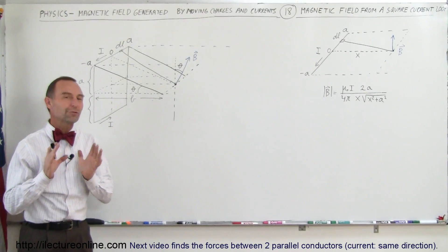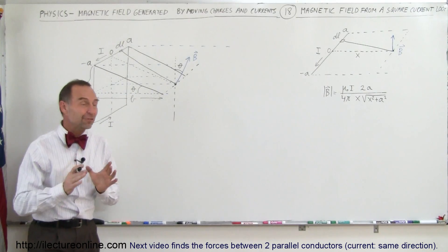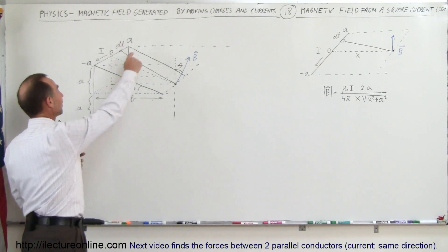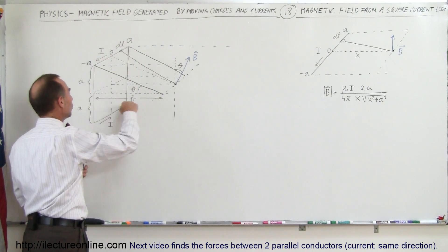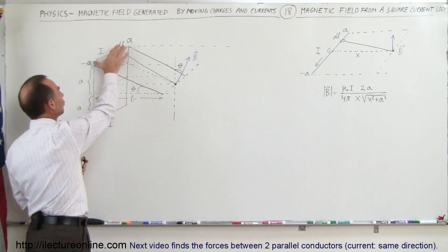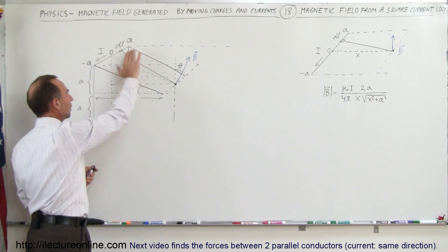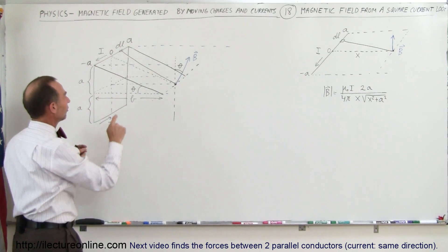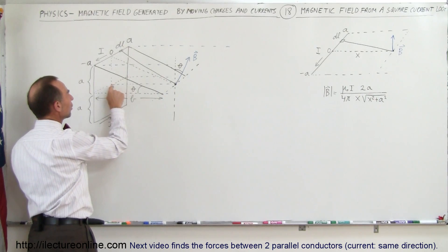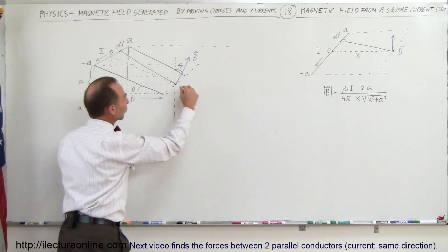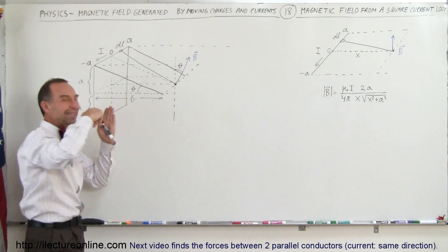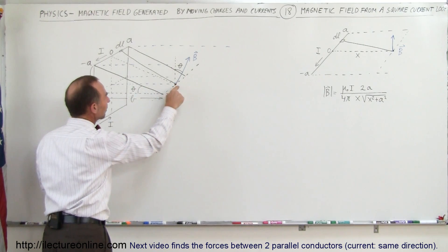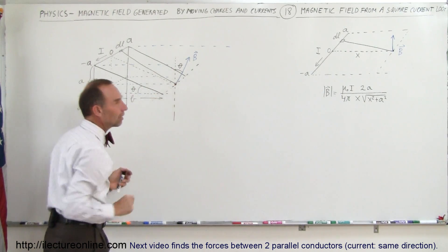Welcome to this lecture. We're going to find the magnetic field caused by a current loop — instead of a circular current loop, we have a square current loop with sides 2A by 2A. We want to find the B field at a point directly along the line perpendicular to the plane of the loop, some distance away from the center.